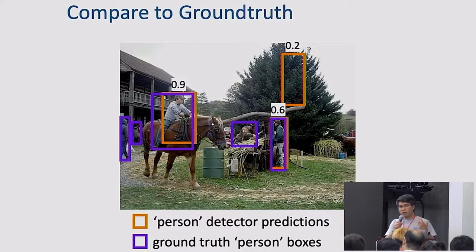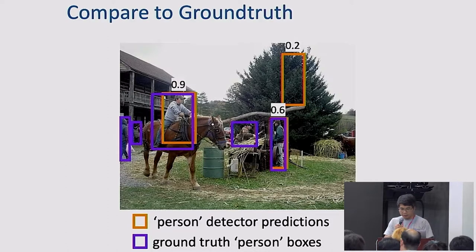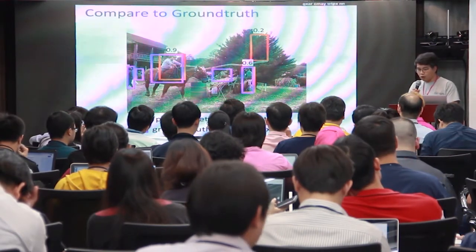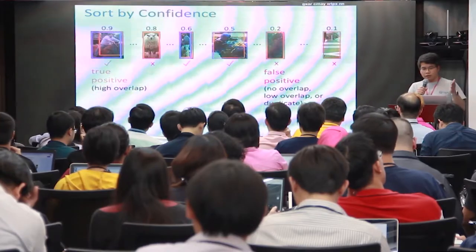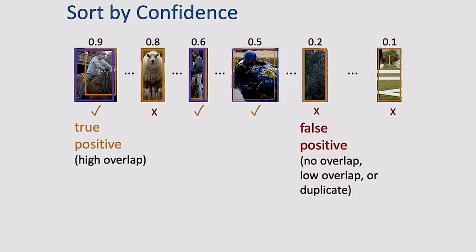At the same time, in the image there are multiple ground truth annotations — regions manually annotated by humans as corresponding to the objects. So given an image, we have a set of ground truth bounding boxes for object locations, and the detector returns a ranked list of predicted outputs. The ground truth is the purple box, and the detector outputs orange boxes with scores, sorted by confidence — 0.9 for the top one, 0.8 for the next, and so on.